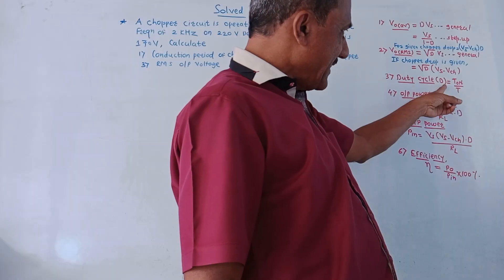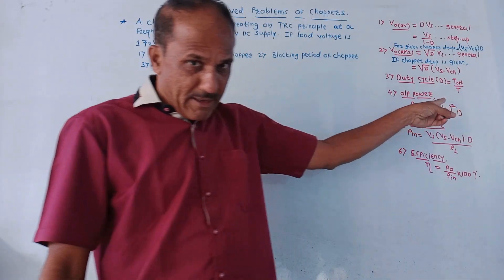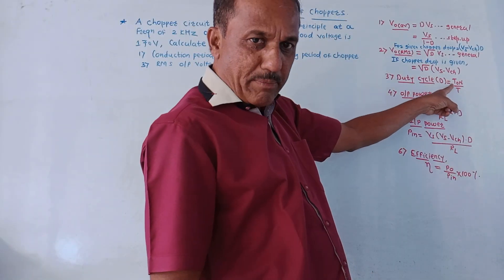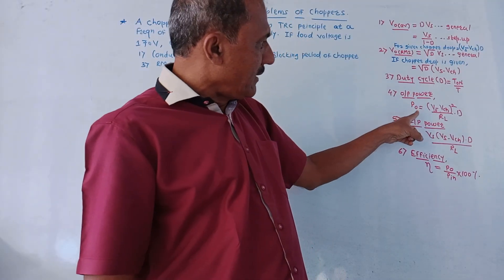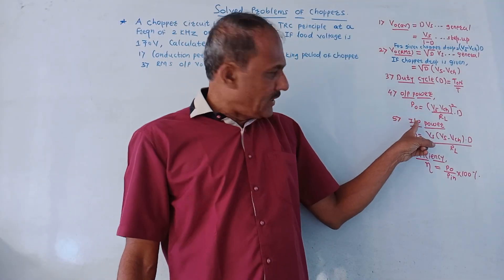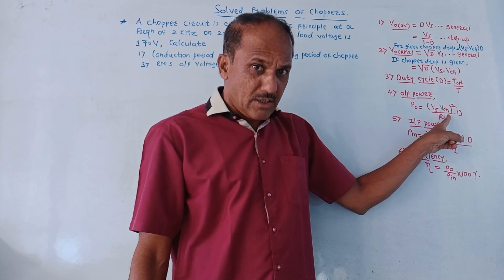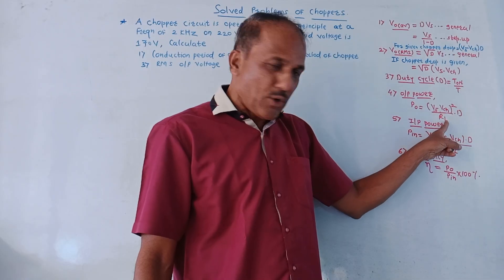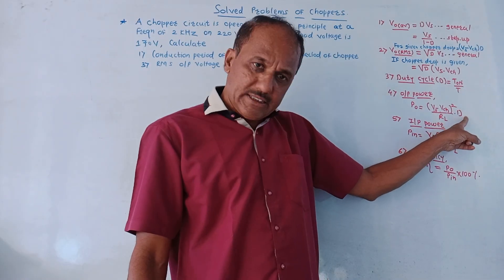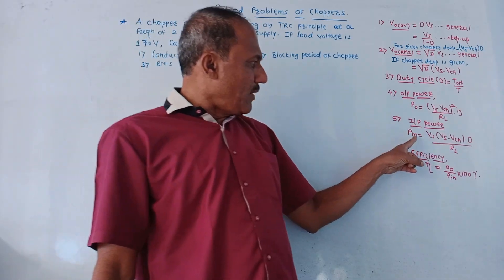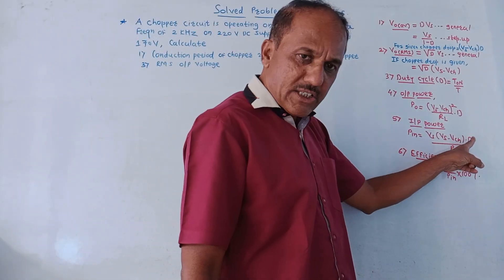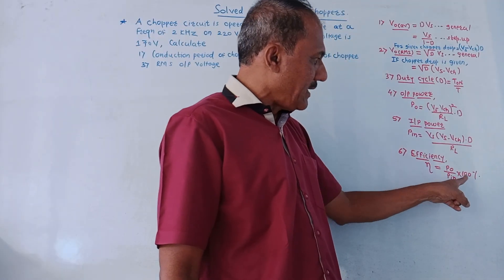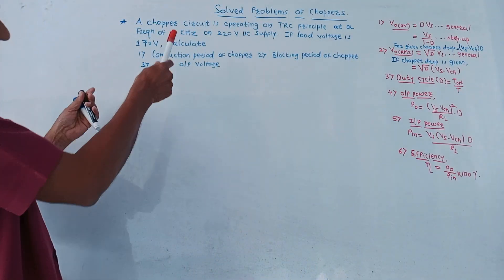Duty cycle D is Ton upon T, where T is the total time period — the combination of on and off time. Input power P0 is (Vs minus Vch) squared upon RL into D, where RL is load resistance and D is duty cycle. Input power Pin is Vs into (Vs minus Vch) into D upon RL. Efficiency eta is P0 upon Pin into 100%.